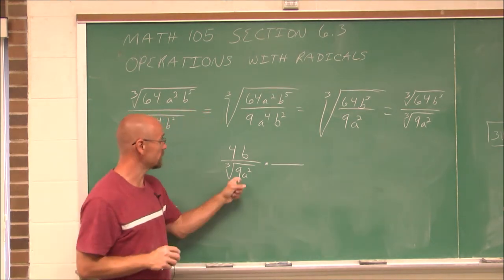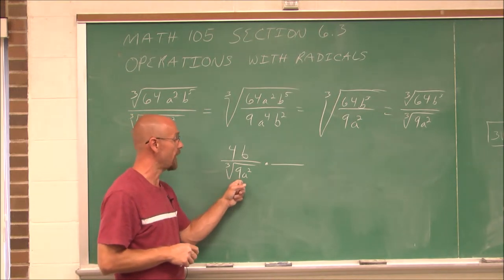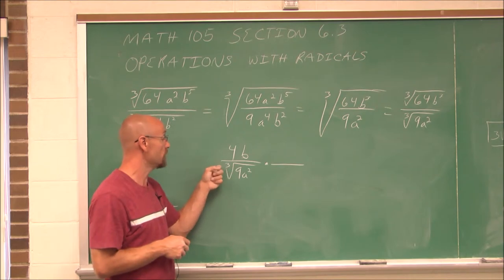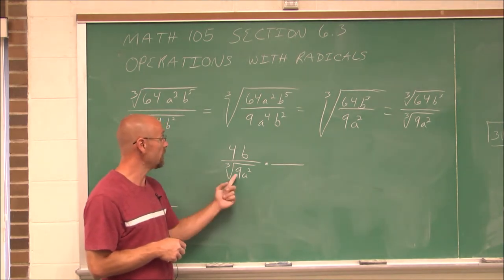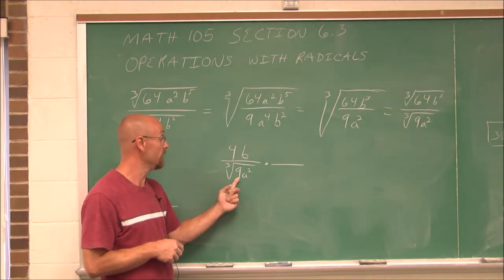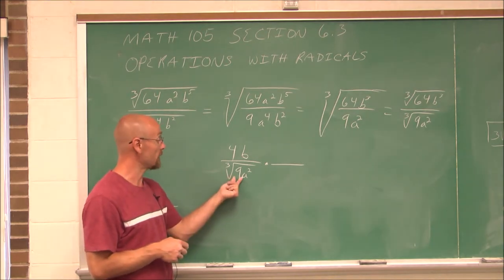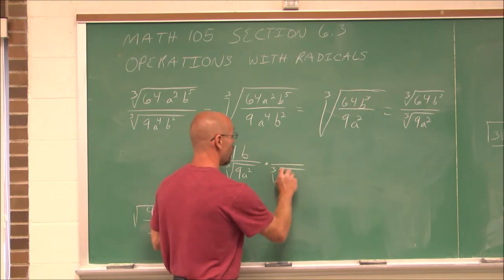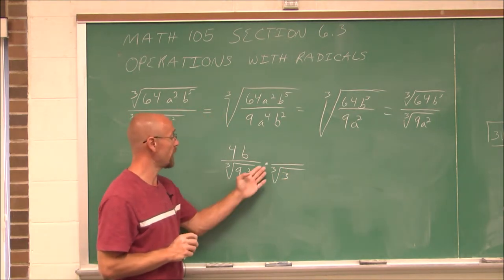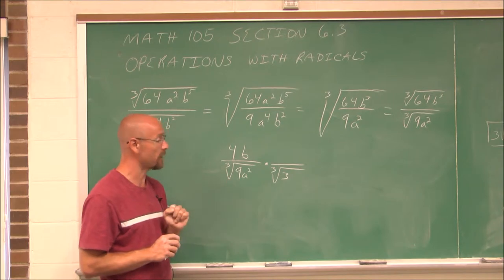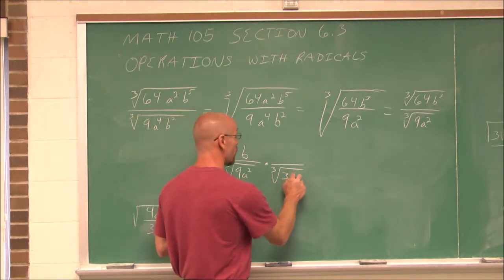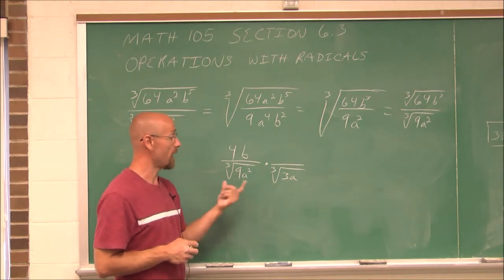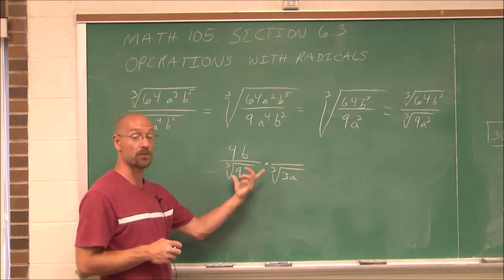To rationalize it, I've identified 9 as a perfect square, but what I need to get rid of this radical is a perfect cube. I would need one more factor of 3 in order for this to be a perfect cube — 9 is two factors of 3, so I need one more factor of 3, giving me the cubed root of 3. Similarly, a² has two factors of a, and I would need one more factor of a to make it a perfect cube. So if I multiply those together, I would have the cubed root of perfect cubes.